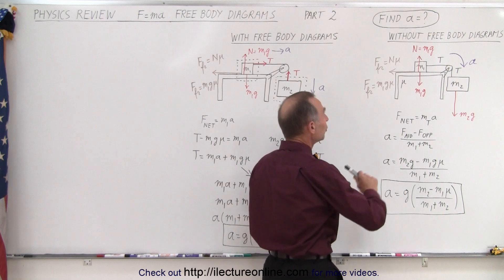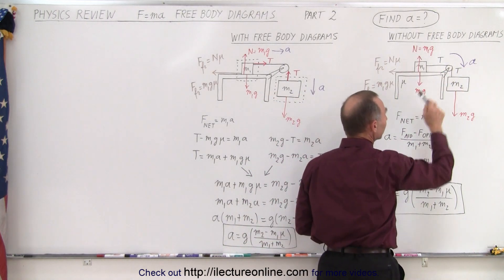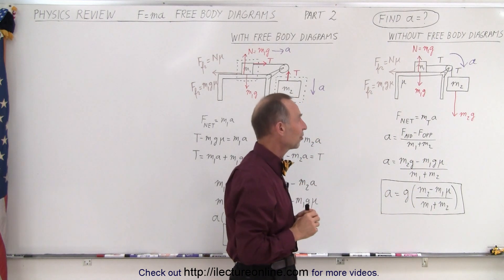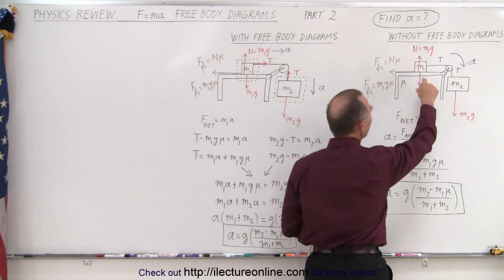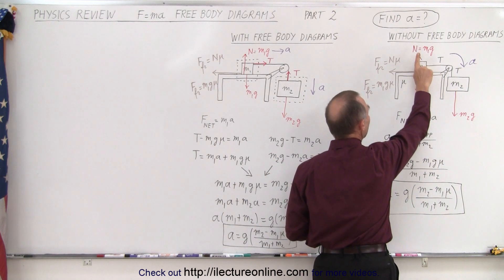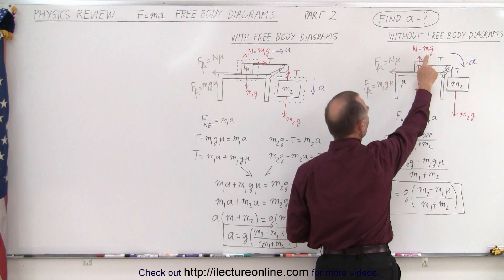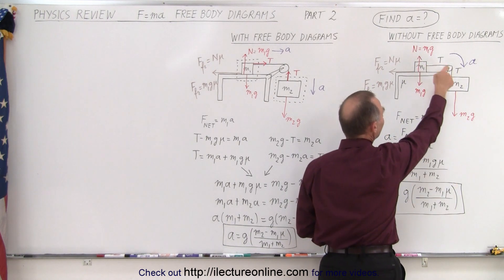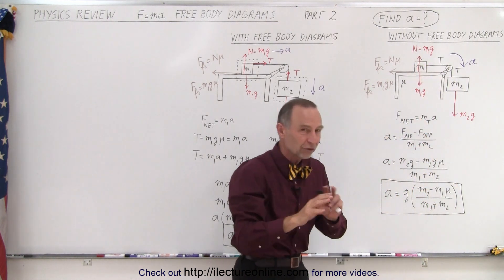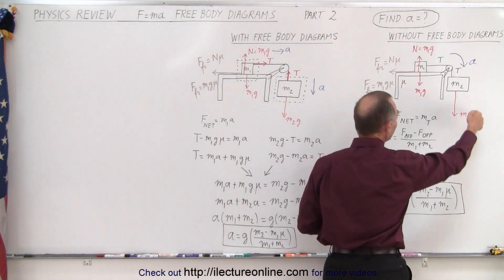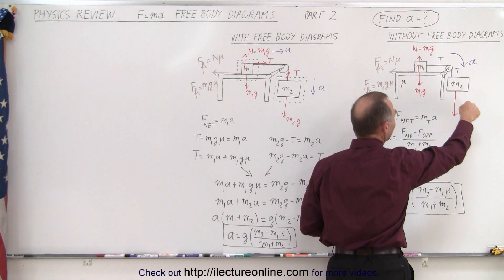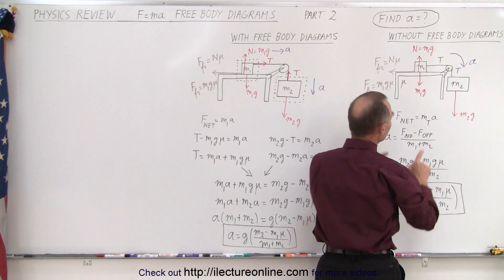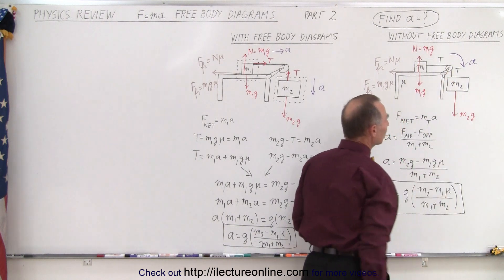When you look at the whole system, you determine which direction you think the acceleration is going to go, and then you only look at the external forces acting on the system. Notice we do have M1g acting downward, but then we have the table pushing back with the normal force in the opposite direction, also equal to M1g, so these two forces cancel each other out. We do have the tension, but that's an internal force to the system, so we ignore that. We are left with the force of gravity acting on M2 and the force of friction acting on M1 — notice they're in opposite directions relative to the acceleration.